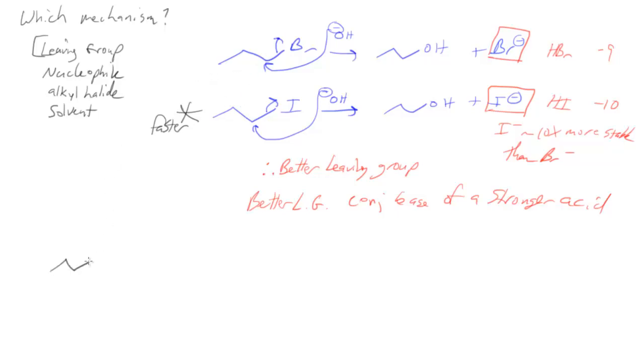What happens in an SN1 mechanism? Well this is the rate determining step of the SN1 mechanism and we can already see where the difference lies. In the rate determining step, I'll either form a bromide or an iodide.